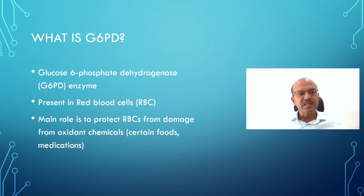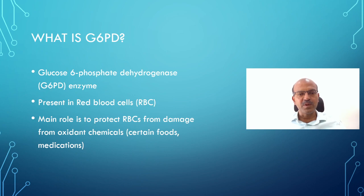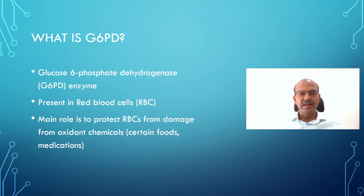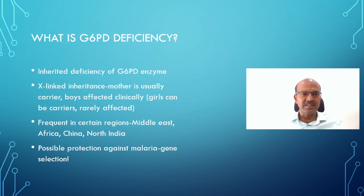G6PD, or glucose-6-phosphate dehydrogenase enzyme, is present in the red blood cells. The main role is to protect the red blood cells from damage from oxidant chemicals which are present in certain foods as well as in medications. It acts through the NADPH pathway and it is very important to protect the red blood cells from destruction from oxidant chemicals.